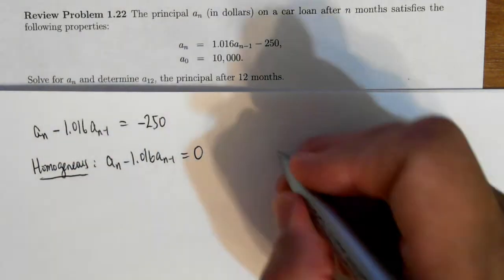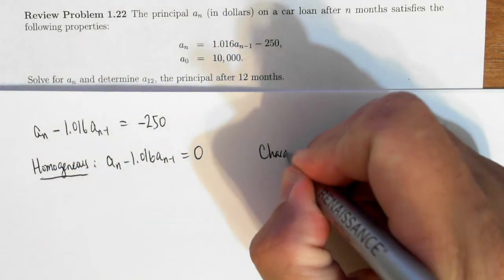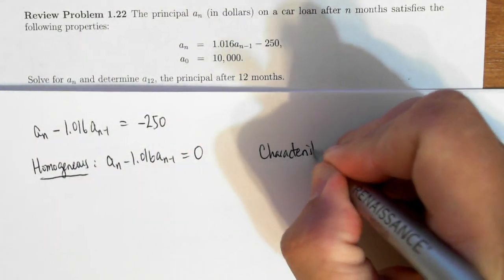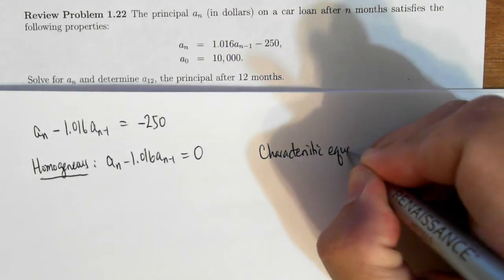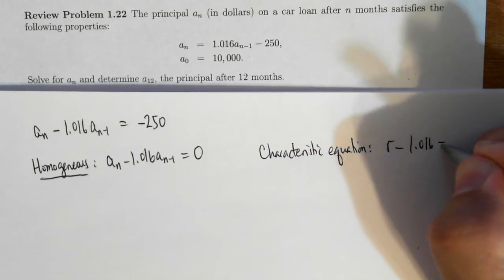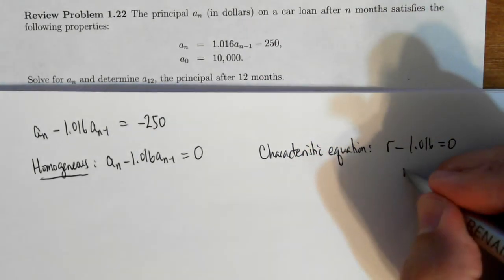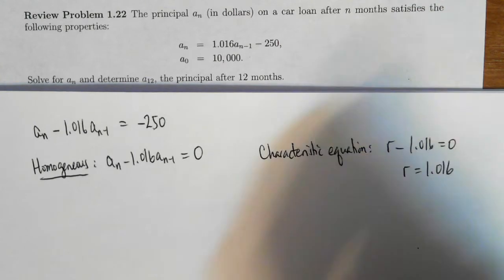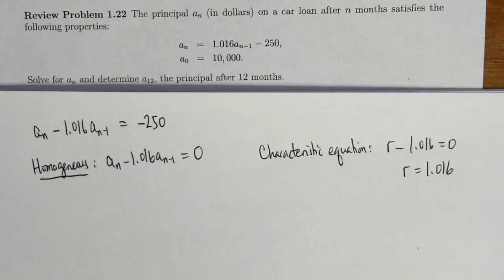Well, the characteristic equation will be very simple. It will be r minus 1.016 equals zero. And solving for r, we find that the one root is 1.016.